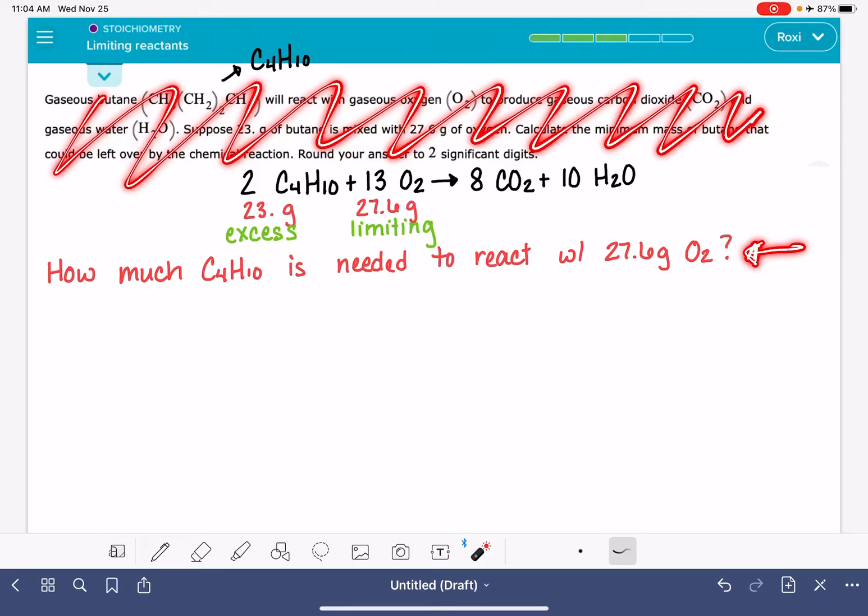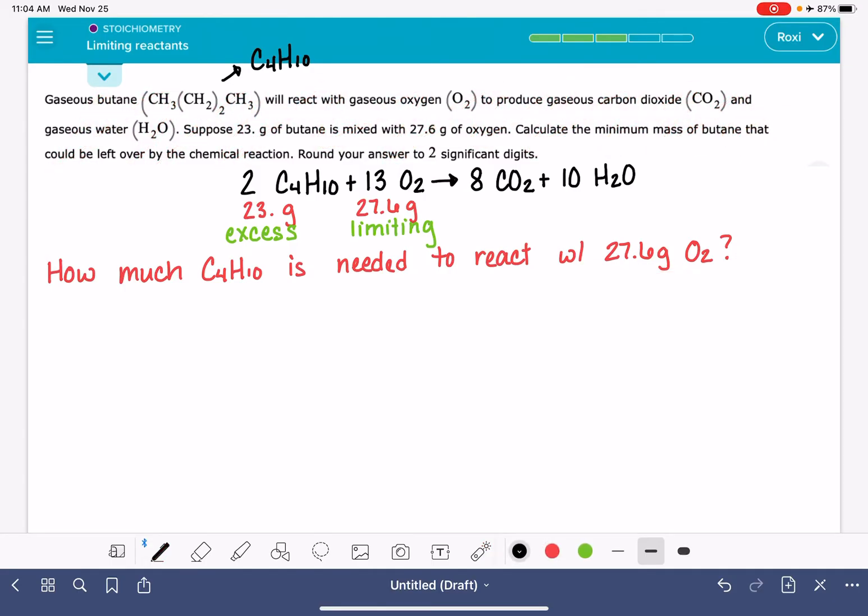We're just being asked to take this starting information, 27.6 grams of O2, we're going to take this starting information and we're going to convert it into information about C4H10. So the first step here, we're going to convert our grams of O2 into moles of O2 using the molecular weight of O2.